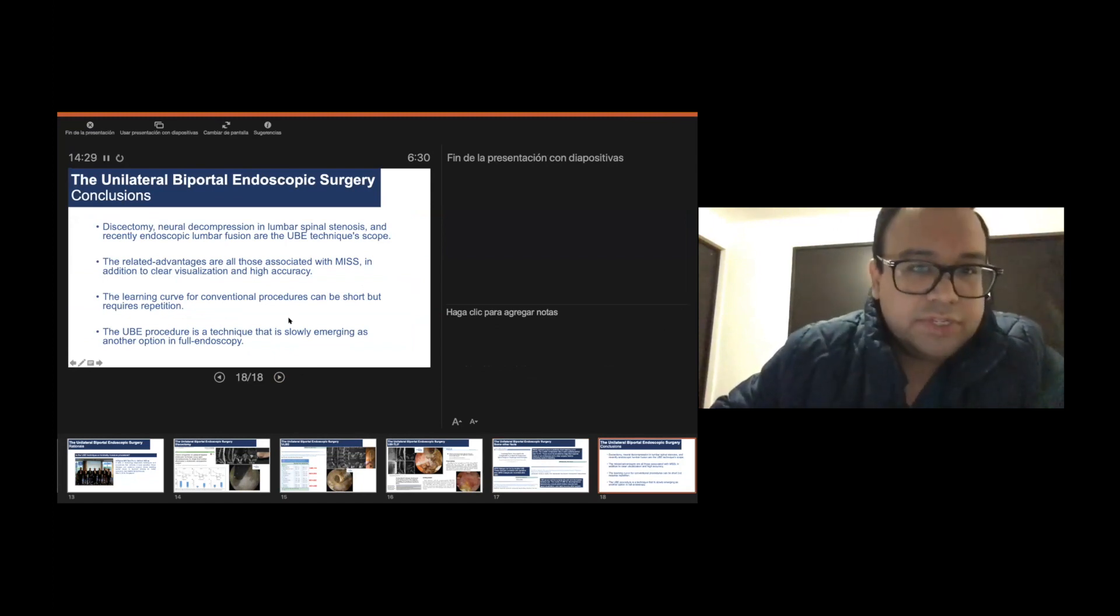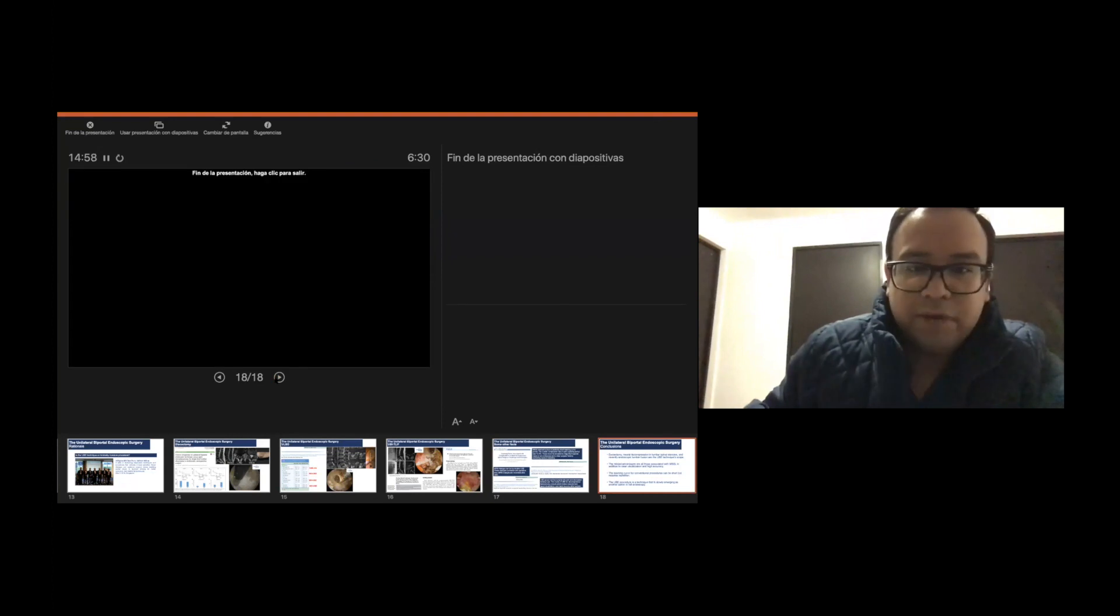As a conclusion, discectomy, neural decompression in lumbar spine stenosis, and recently endoscopic lumbar fusion are the UBE technique's scope. The related advantages are all of those associated with minimally invasive procedures in addition to clear visualization and high accuracy. The learning curve for conventional procedures can be short but requires repetition. But the UBE procedure is a technique that is slowly emerging as another option in the full endoscopy portfolio. Thank you very much.